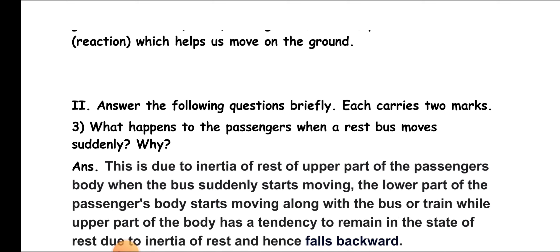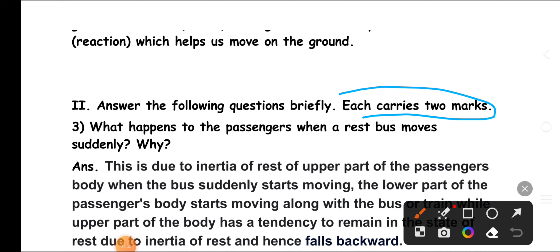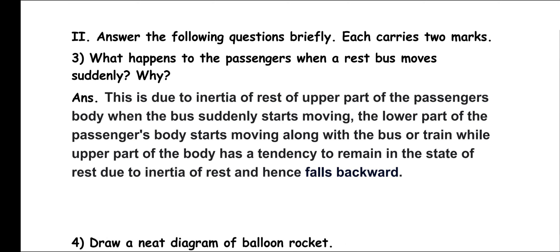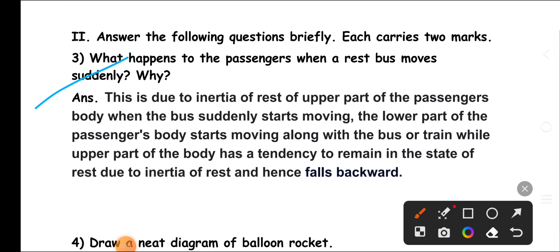Next section: Answer the following questions. Each carries two marks. Question 3: What happens to the passengers when a rest bus moves suddenly? Why? Answer: This is due to inertia of rest of the upper part of the passenger's body. When the bus suddenly starts moving, the lower part of the passenger's body starts moving along with the bus or train, while the upper part of the body has a tendency to remain in the state of rest due to inertia of rest, and hence falls backward.